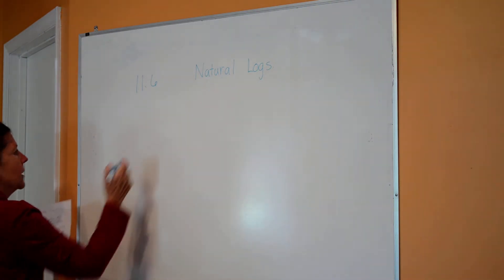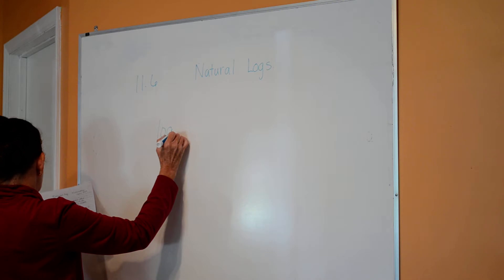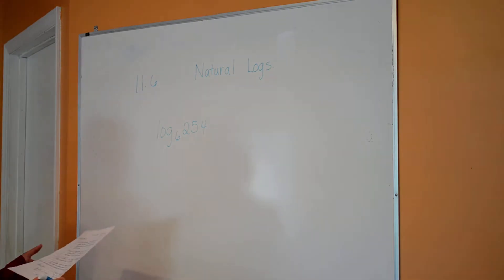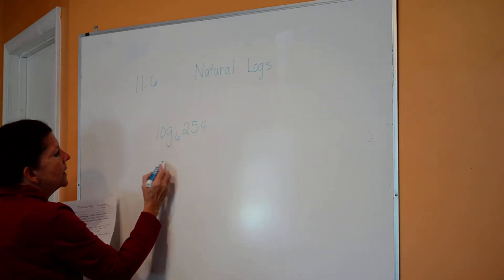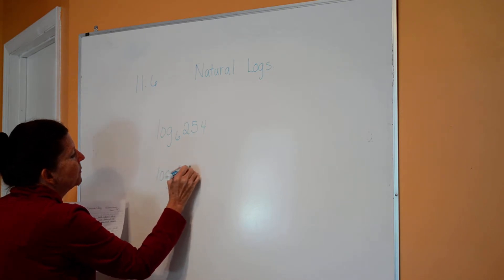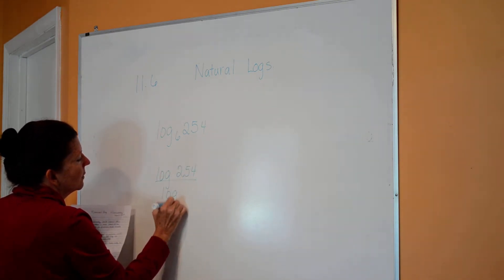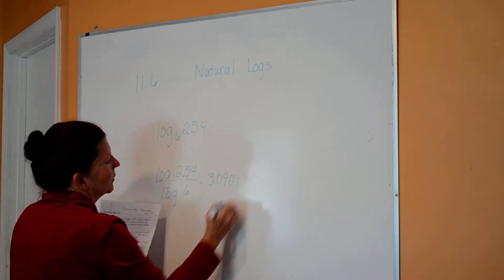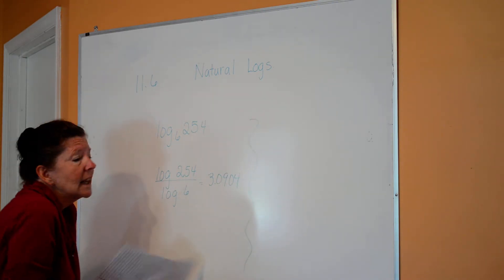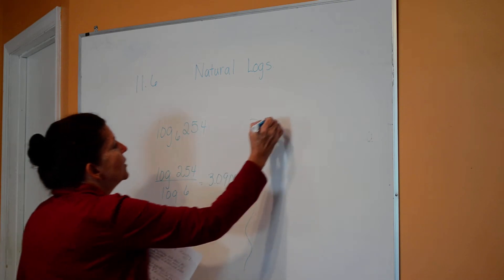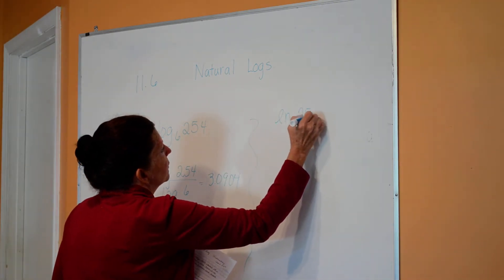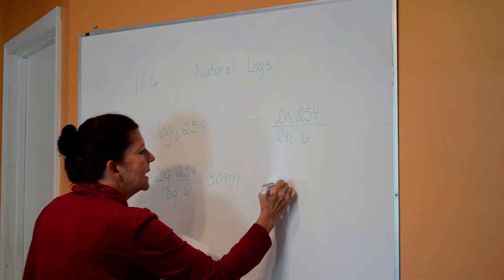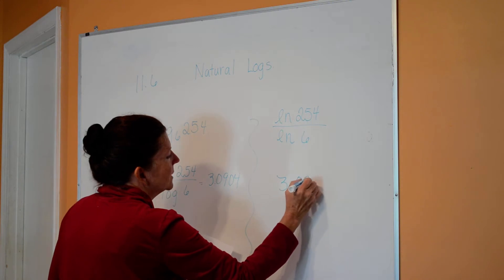Let's say we have the log base 6 of 254. You know that's equal to the log of 254 divided by the log of 6, and that's going to give me 3.0904, depending on where they want to round it. I can also use natural logs — the natural log of 254 divided by the natural log of 6. It's still going to give me 3.0904.